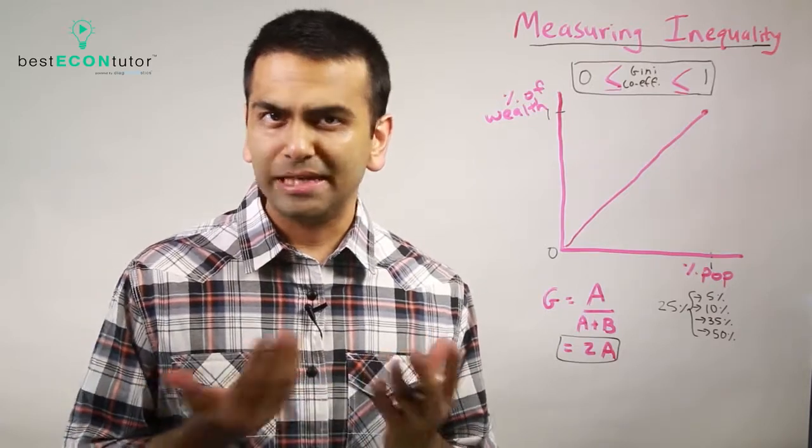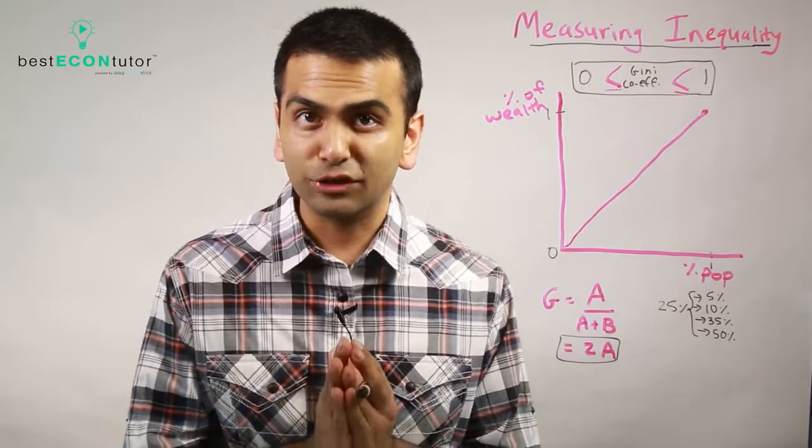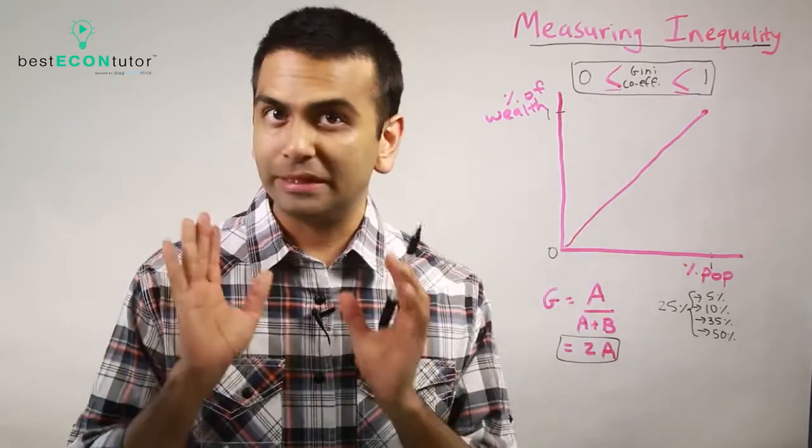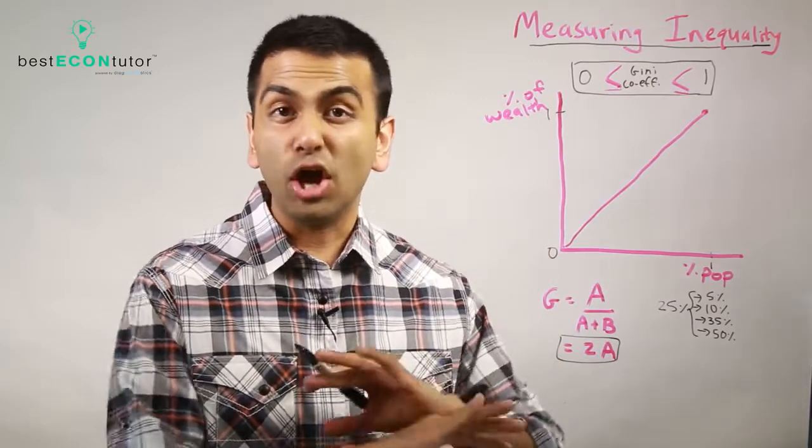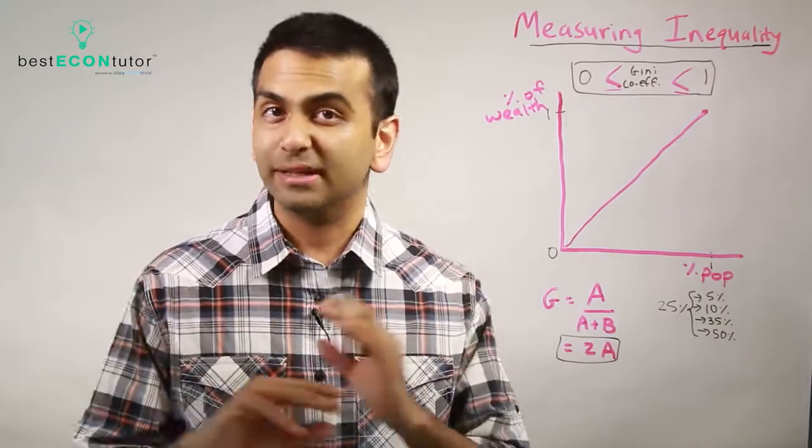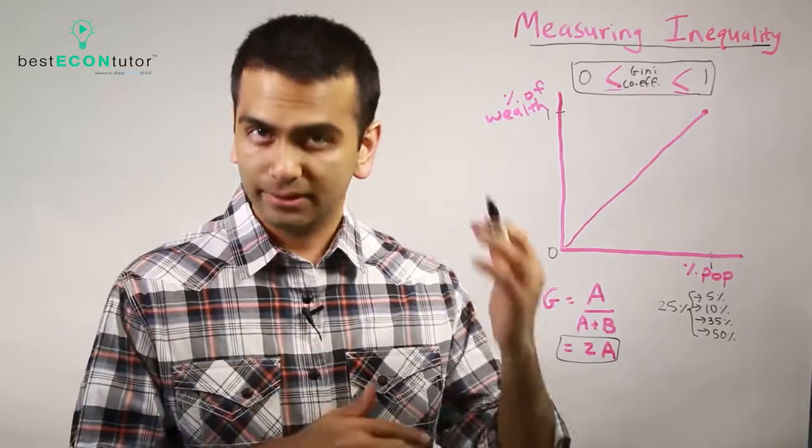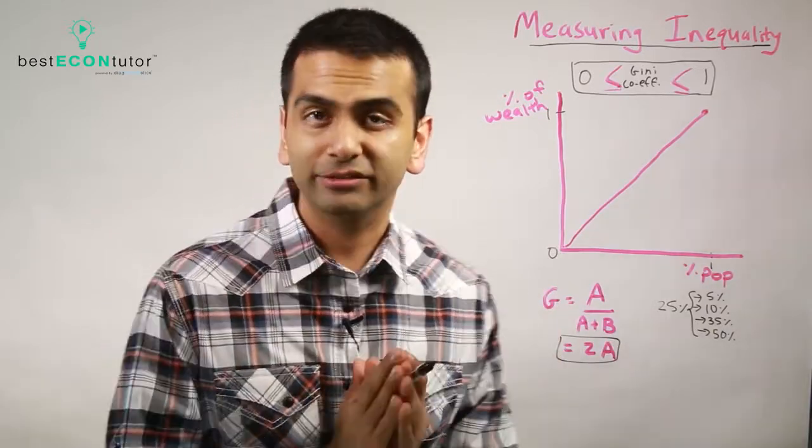Now let's talk about how to measure inequality. The main way we're going to measure inequality is the Gini coefficient (G-I-N-I), which is always between 0 and 1. One means it's a totally unequal society, and 0 means perfect equality. If everyone has the exact same amount of money, your Gini coefficient is 0. So the higher the Gini coefficient, the more unequal the society is.